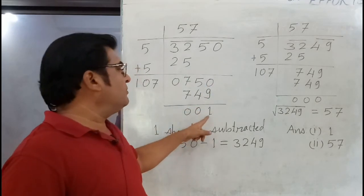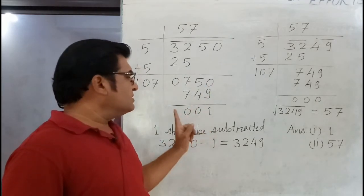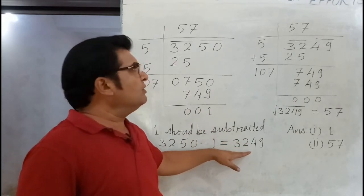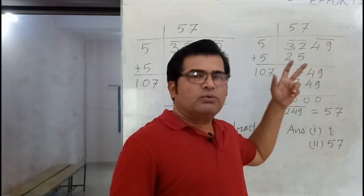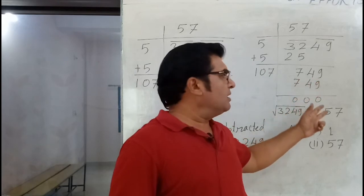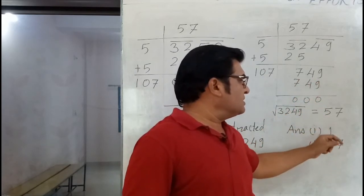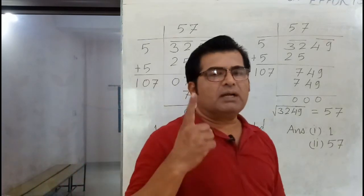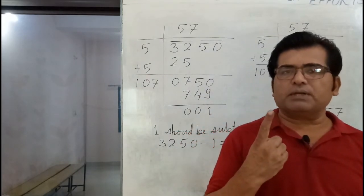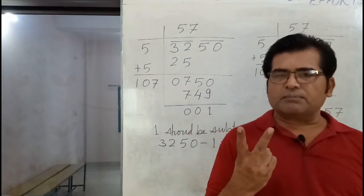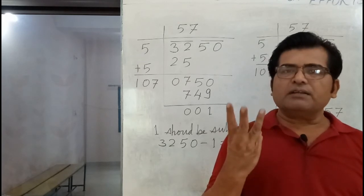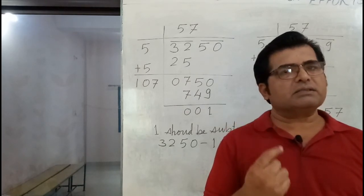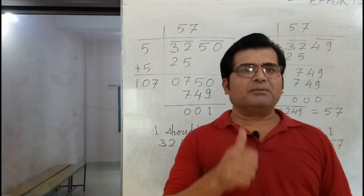To summarize the steps: step one — find the square root of the given number using the division method; the remainder will be left over. Step two — subtract that remainder from the given number. Step three — find the square root of the new number. Step four — write the answers: the remainder is the first answer and the square root is the second answer. Thank you, have a nice day.